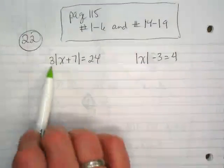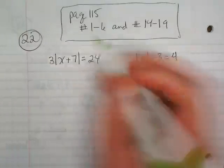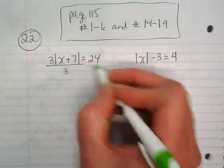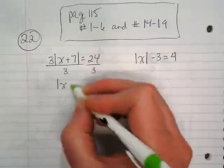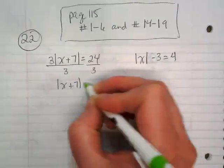First step on the first example would be to do what with this 3? Let's divide by the 3 and get rid of it. That's going to leave us with the absolute value of x plus 7 equals 8.